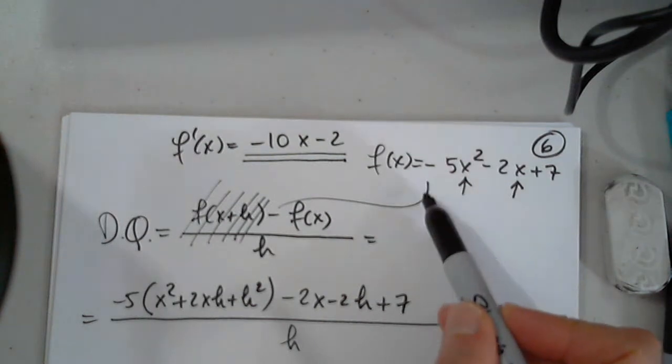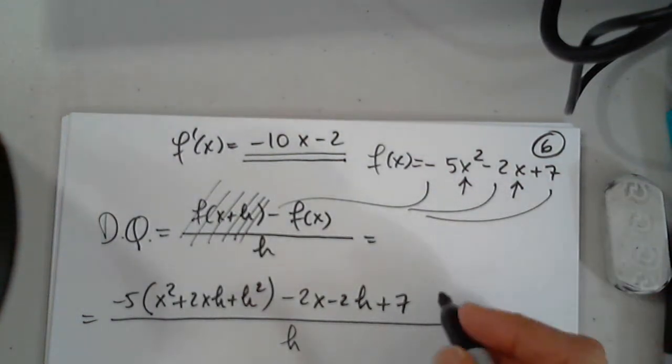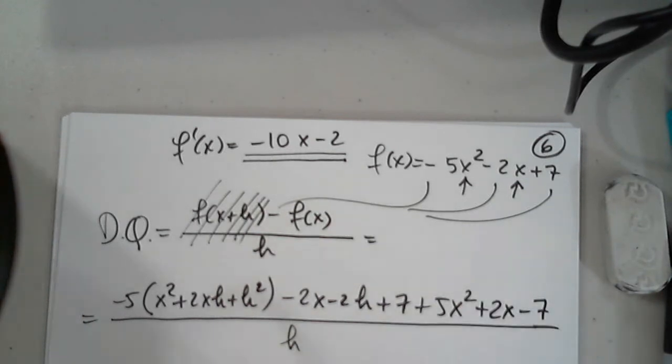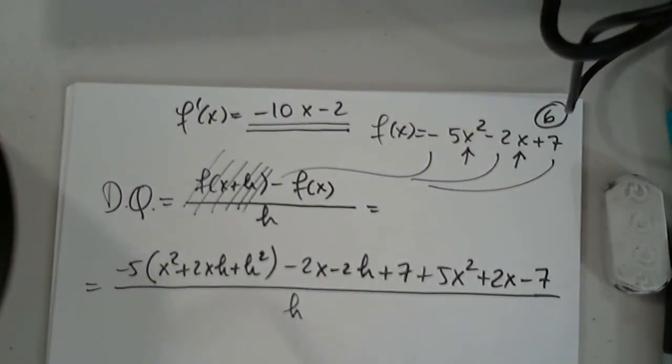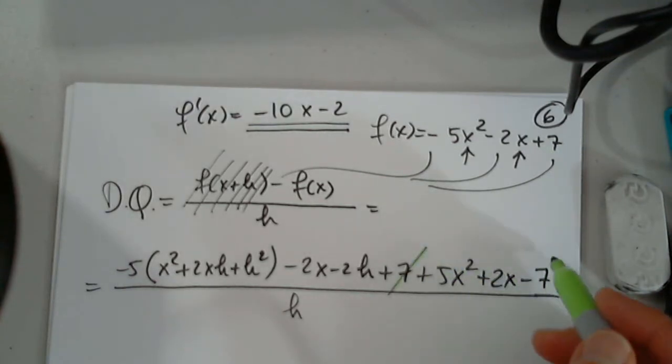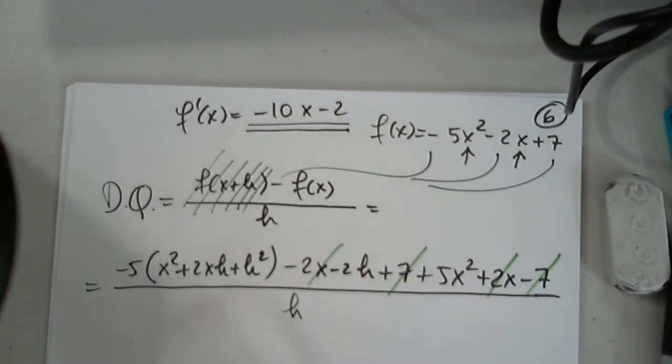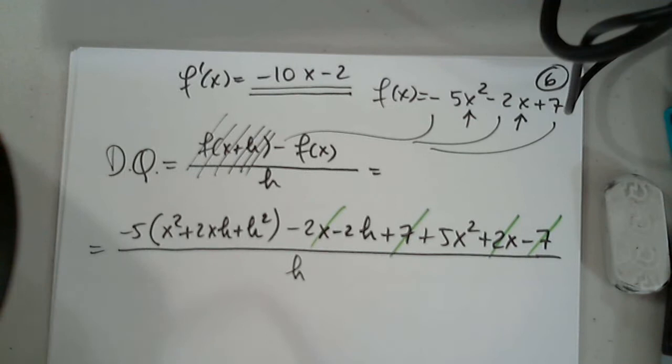Now, when I distribute negative 1 to these three terms, I get positive 5x squared, positive 2x, and minus 7. I know that all terms that do not have h must go away. If they don't, I have an error somewhere. So at least I see these two going away and these two going away.